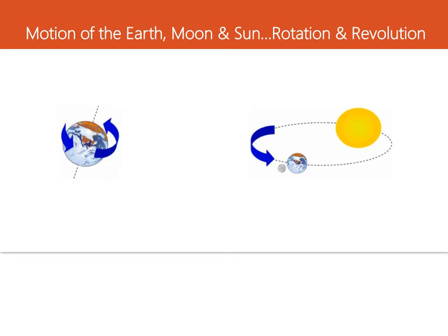It takes one day, or 24 hours, for the Earth to make one complete rotation around its axis. The rotation of the Earth is responsible for the change between night and day. When one part of the Earth is rotated toward the Sun, it is daytime. When that same part of the Earth is rotated away from the Sun, it's nighttime there.